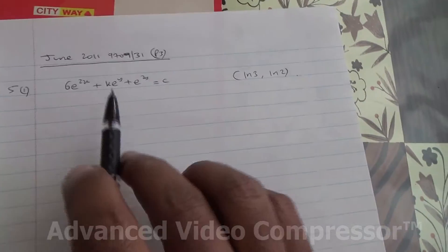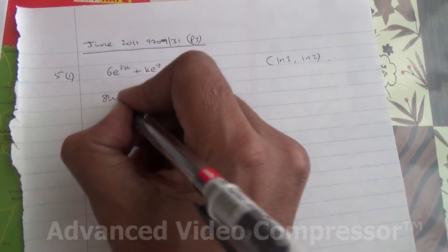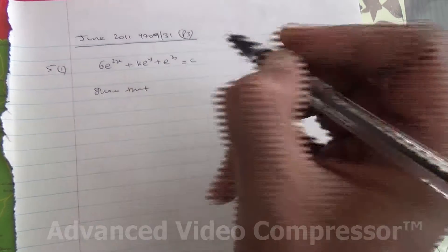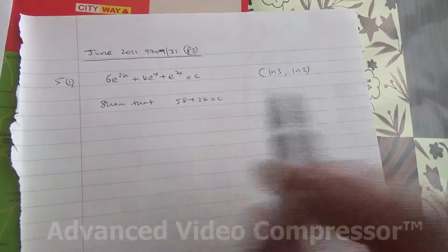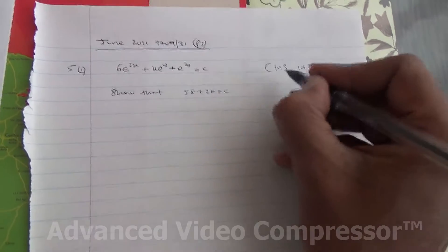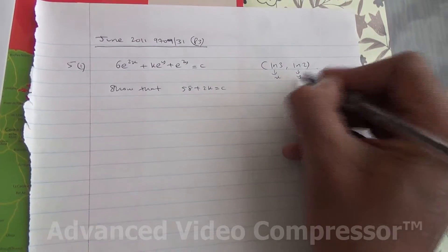Good, so here is the equation. We need to show that 58 plus 2k is equal to c. Alright, so we're going to substitute. So this is x, this is y.